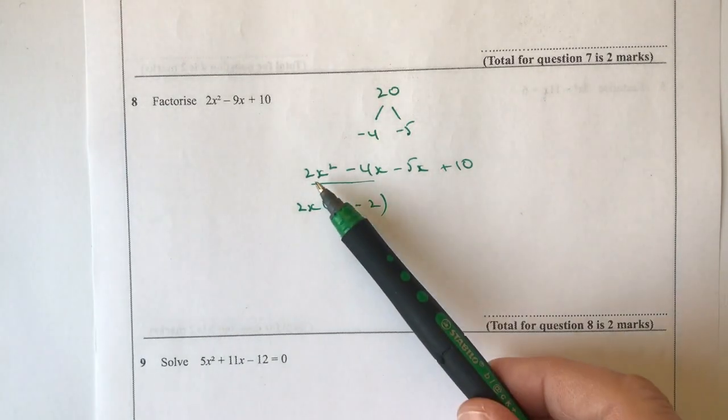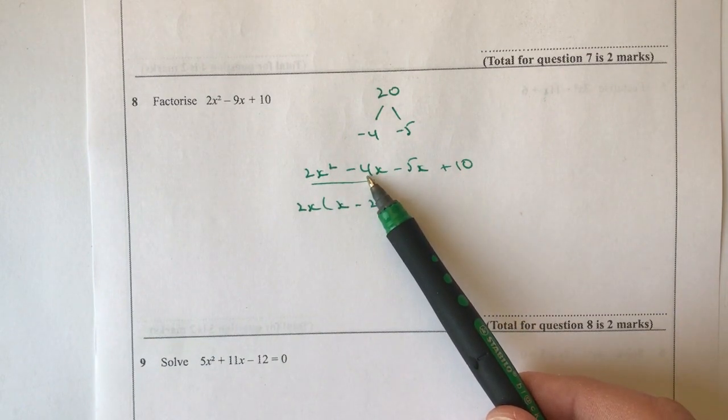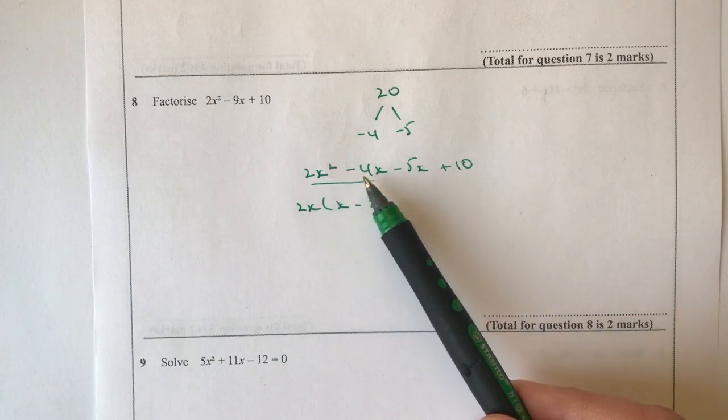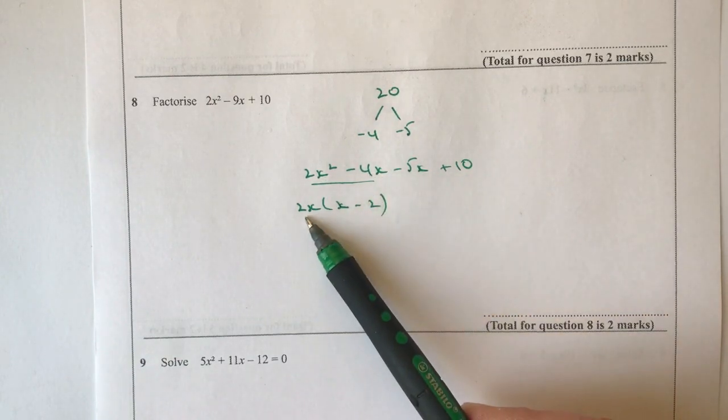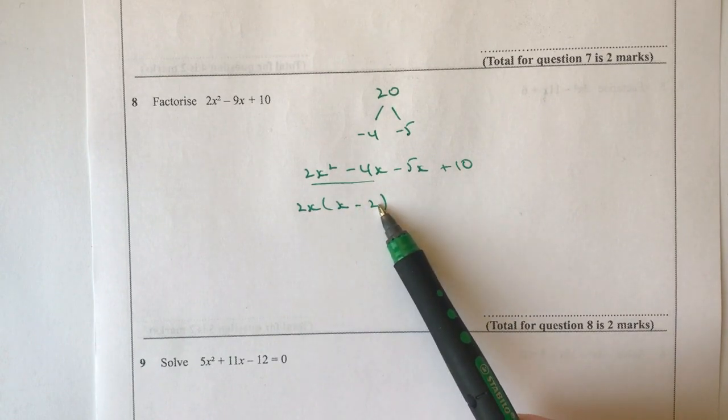But basically, all I've done is I've looked at these two terms, and I've said the common number to both, the highest common factor to both the numbers is 2. And then also, I can factorise for x as well, because I've got x squared there and x here. So I can take x out. So then I've got 2x multiplied by x minus 2.